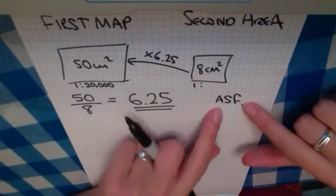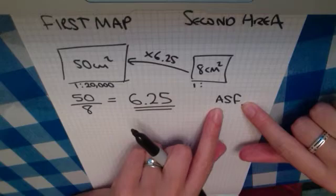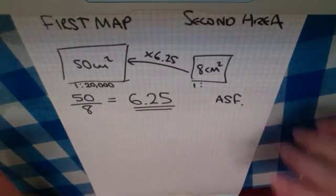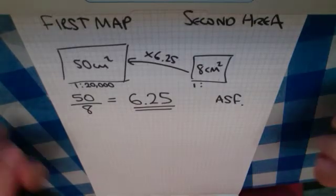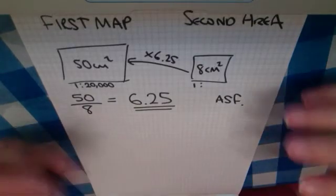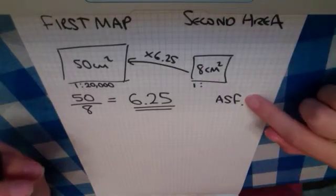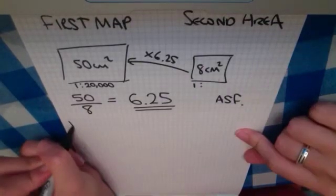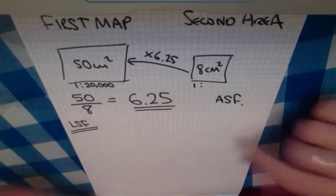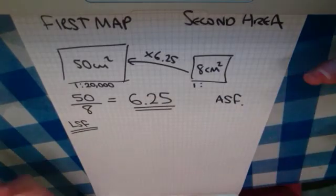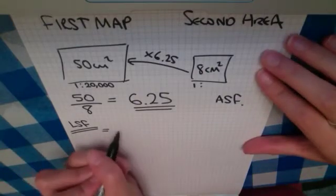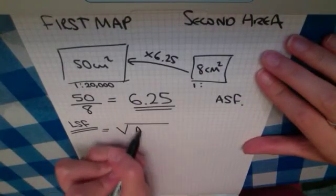And now we've got the area scale factor. That's going to enable us to find the length scale factor. Now usually, in the previous questions, we've gone from length scale factor to area scale factor, and the way that you did that was to square. But in this instance, we've got to go the other way around. We've got to go from area scale factor to length scale factor. So how do we find that? Well, it's the inverse operation of squaring.